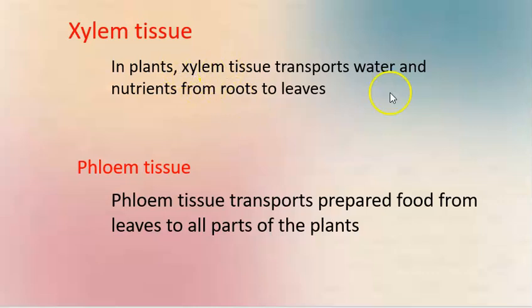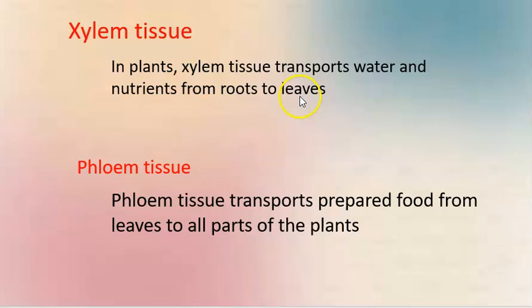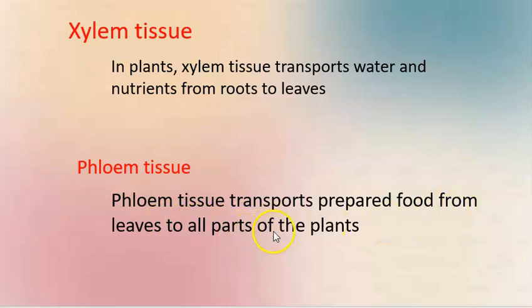Some of these are called xylem. Xylem tissue transports water and nutrients from roots to leaves. The water and nutrients travel from the roots up through the leaves.